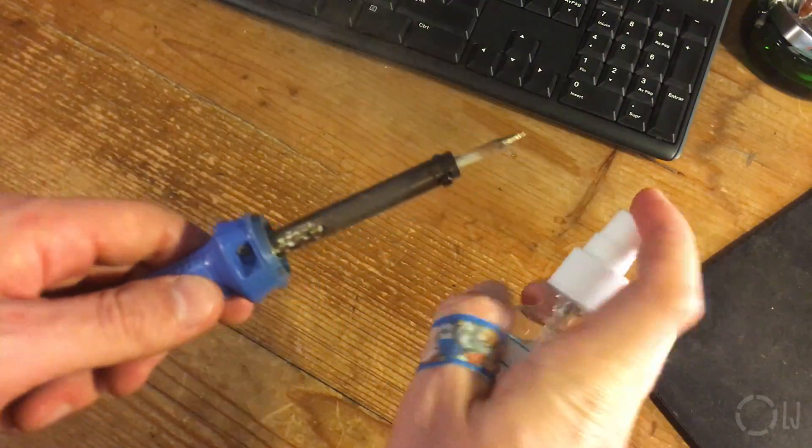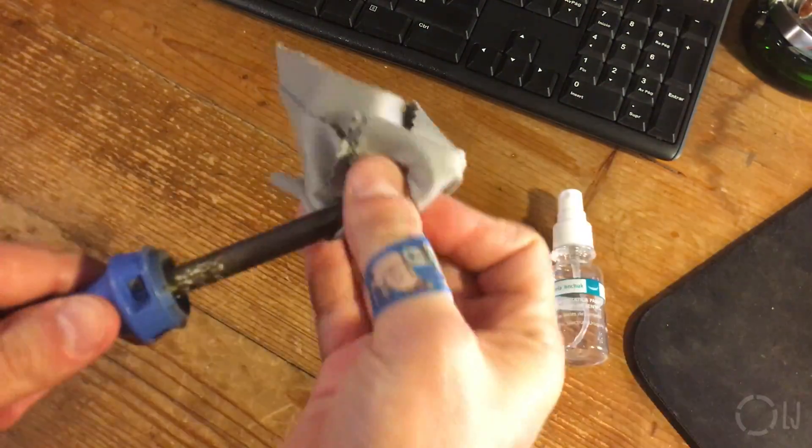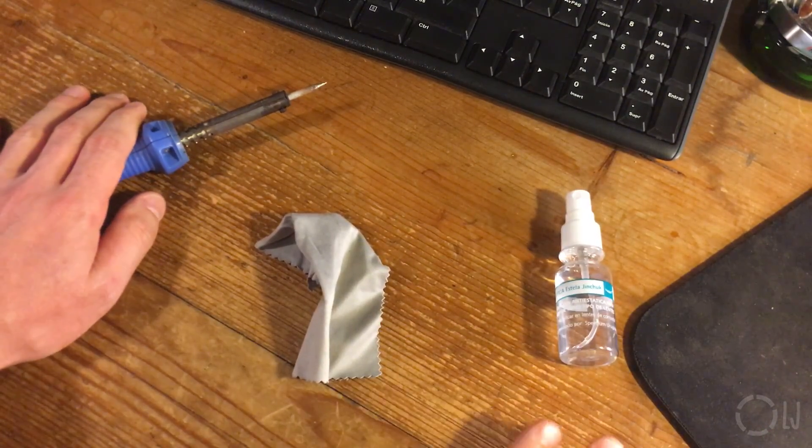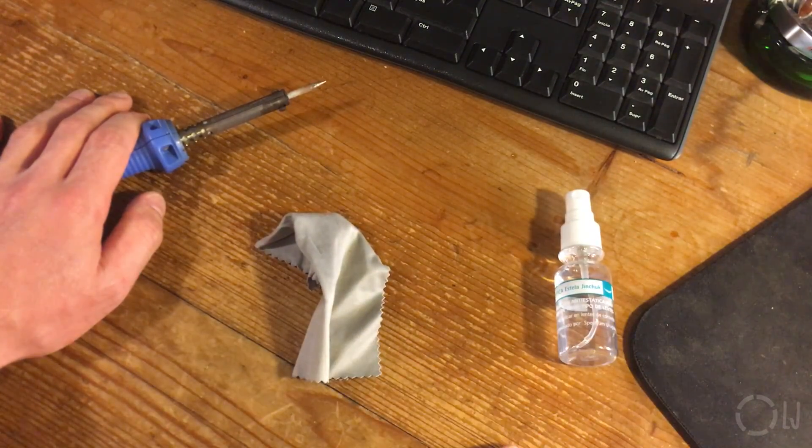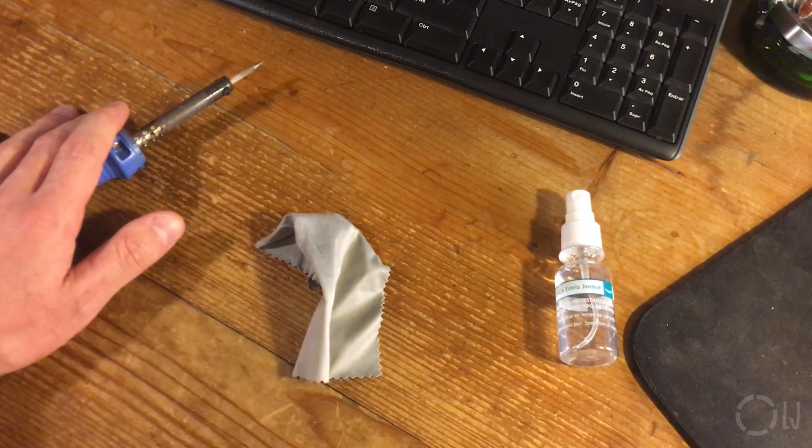Second, try to keep the tip clean as much as you can. It's so important and takes so little effort. However, under no circumstances should you use steel wool, which people do. Look, cleaning the iron with steel wool is like wiping your ass with a brillo pad.